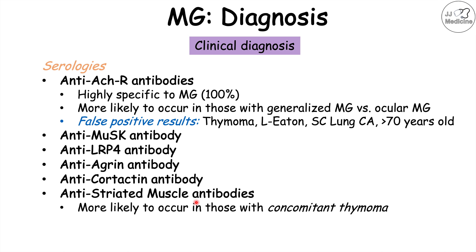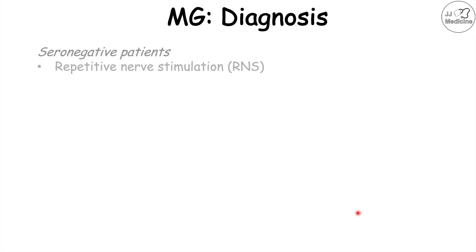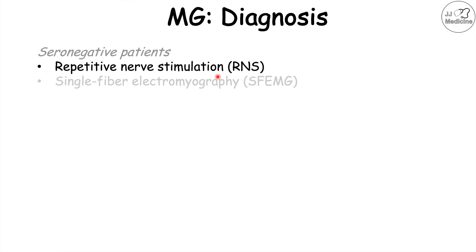Anti-striated muscle antibodies are more likely to occur in those with concomitant thymomas. In patients who are seronegative — where blood work has not found any of those autoantibodies — other tests can be performed, including repetitive nerve stimulation or single fiber electromyography.